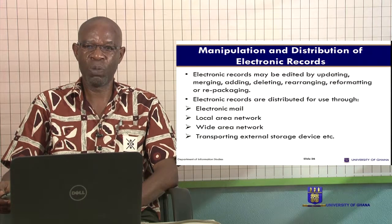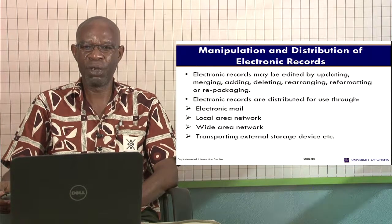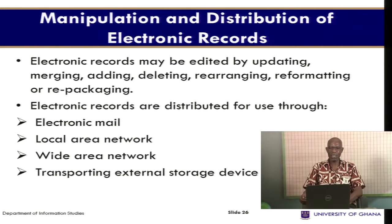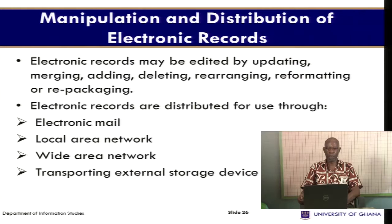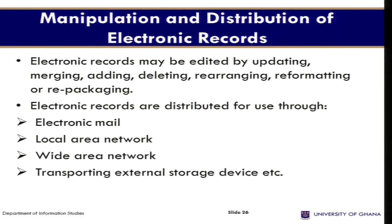Manipulation and distribution of electronic records: Electronic records may be edited by updating, merging, adding, deleting, rearranging and more — this is the advantage of electronic records. In the case of paper-based records, if there is an error you may have to retype or rewrite the whole thing, whereas with electronic records you can delete a sentence and replace it. Electronic records are distributed for use through e-mail, local area network, and wide area network. Within an institution you may have a local area network; within a community you may have a wide area network. Because of the compactness, it is also easy to carry a CD, magnetic tape or pen drive from one point to another without trouble.